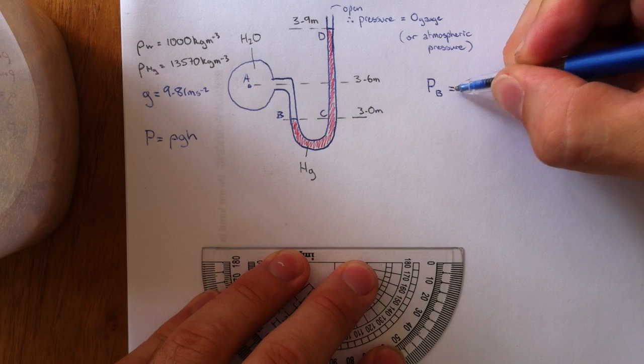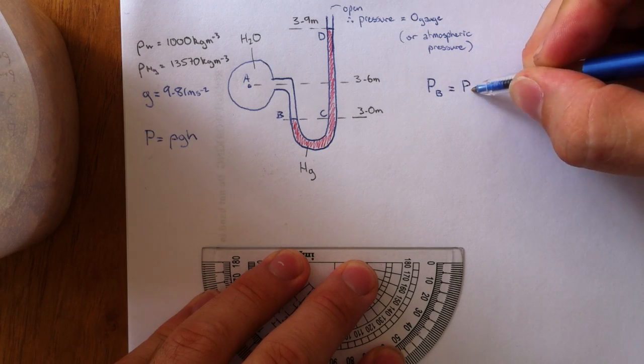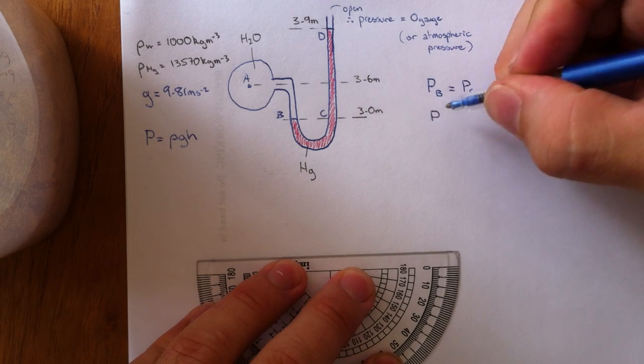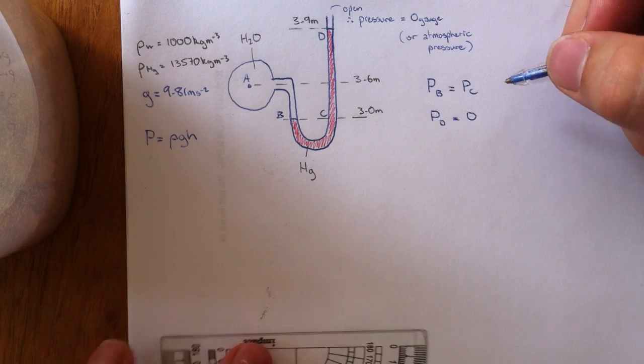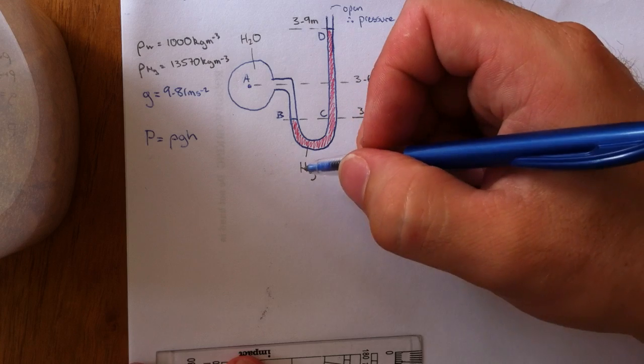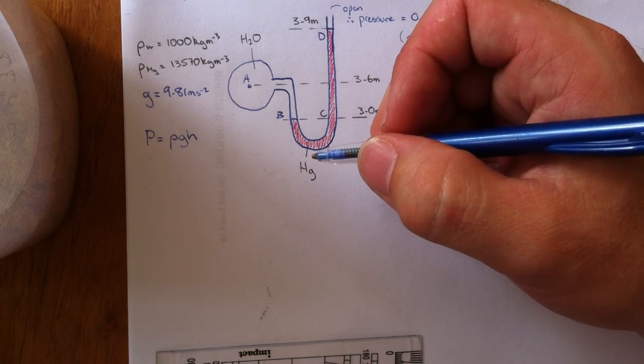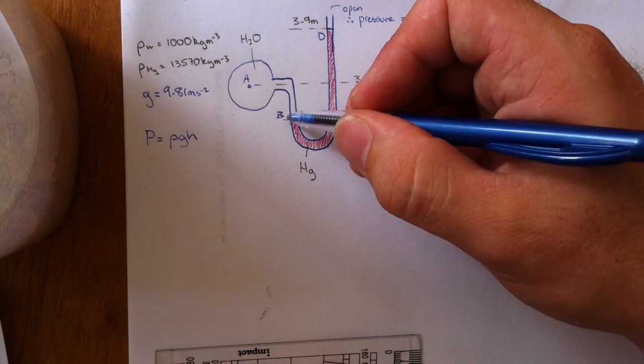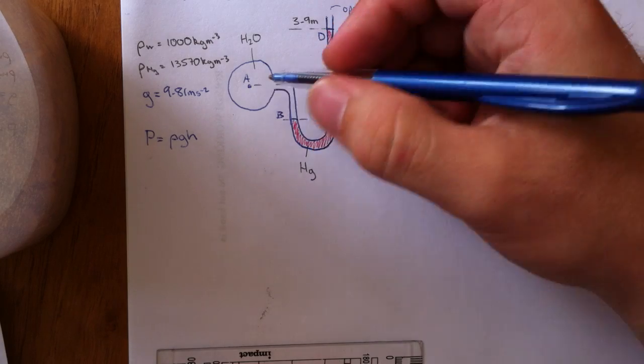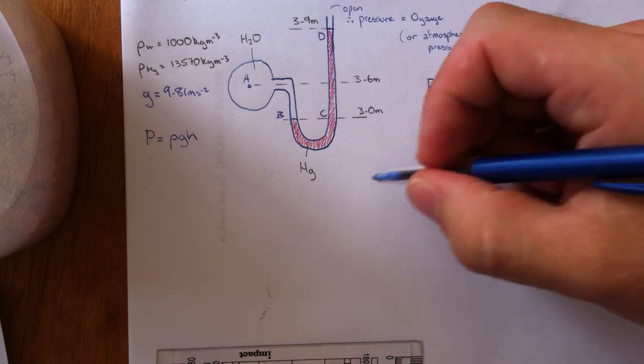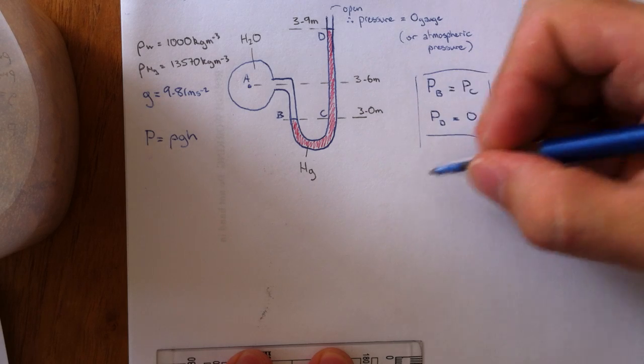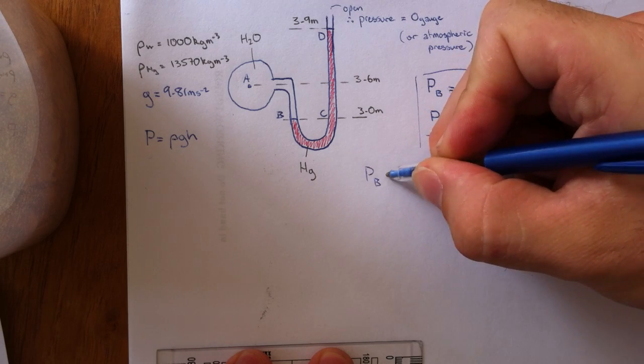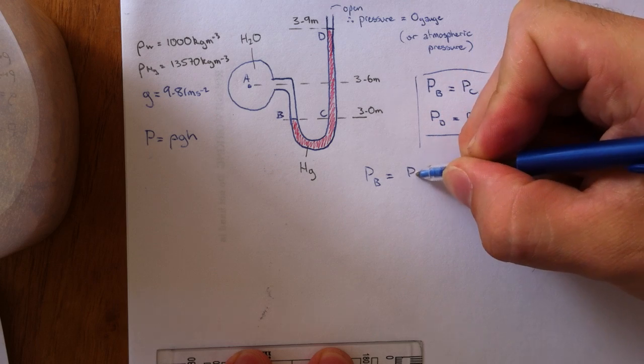Pressure at B equals pressure at C and pressure at D is 0. Now what we're going to do is define the pressure at B in terms of the pressure at A.